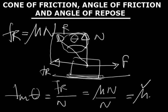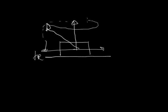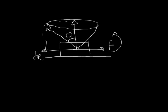Now I will study the cone of friction, which is related to the angle of friction. If I draw the body and apply a force, the friction acts one way, the normal reaction acts another way, and their resultant is as we have seen. As I rotate this force in the whole plane, it forms an imaginary cone. The semi-vertex angle of this cone is the angle of friction.